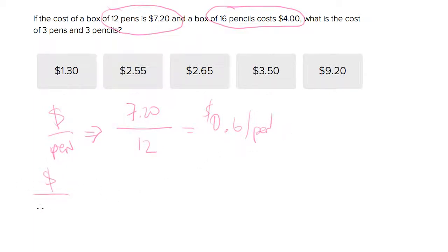And let's do this again except with pencils. We want to figure out total dollars over total pencils, so we've got $4.00 over 16 pencils. Again I'm going to plug that into a calculator and that's going to be 25 cents per pencil.